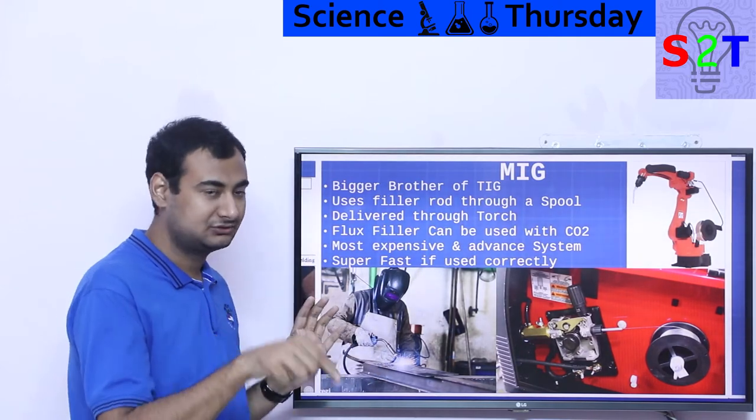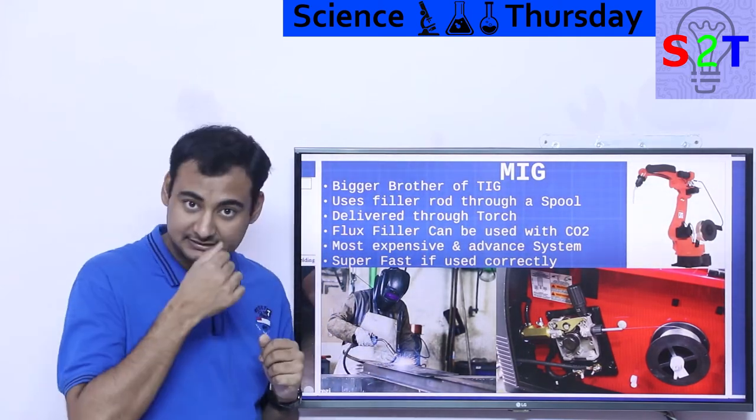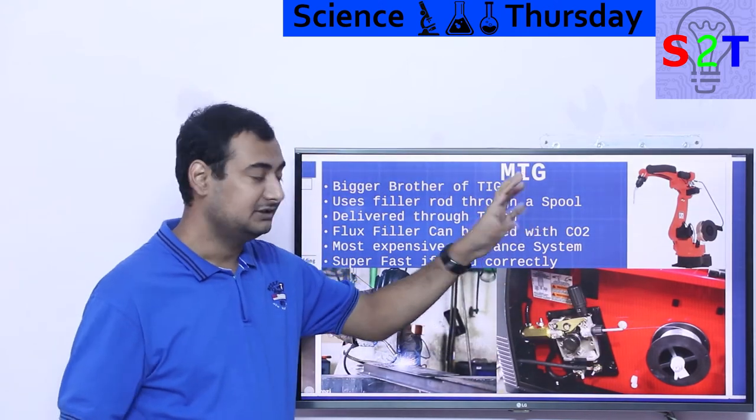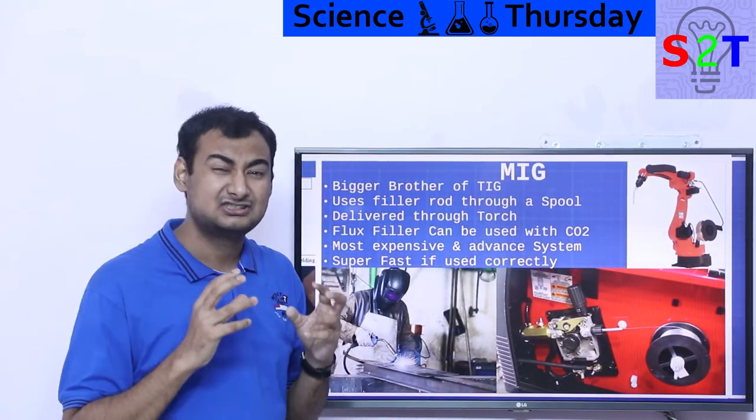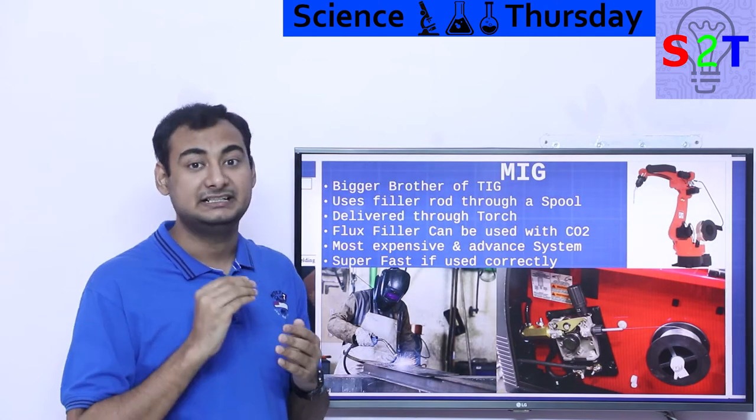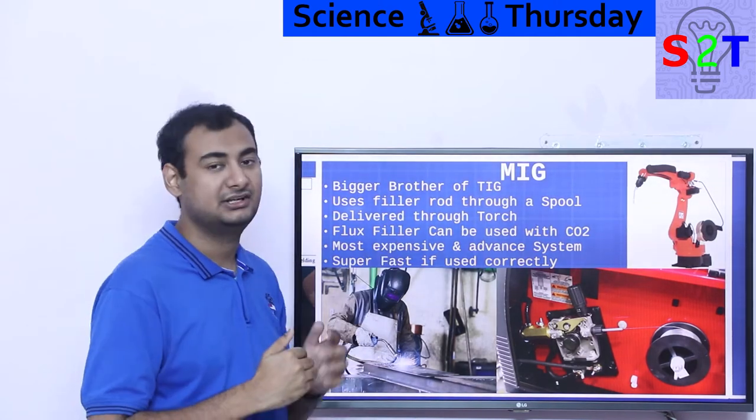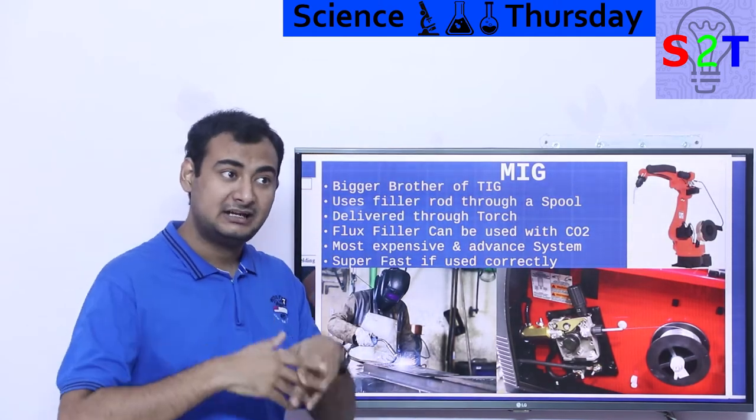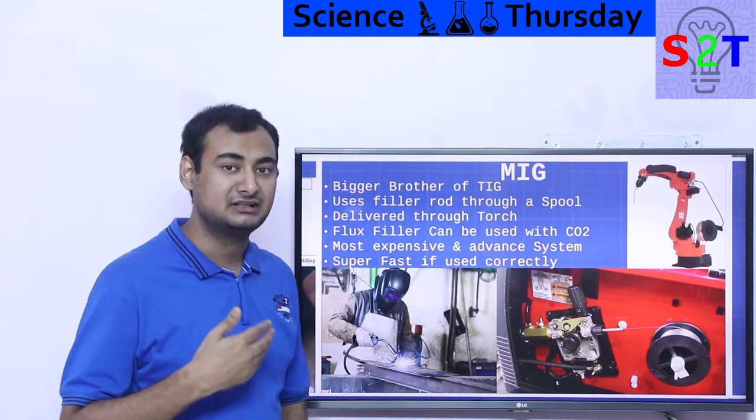Now it delivers everything through the torch. That's the awesome part. And some designs have the filler system built in such a way that it's almost like a flux core. And the benefit of that is that it requires only cheaper carbon dioxide as a shielding gas. And some have been pushed to a point where you do not even need that gas.